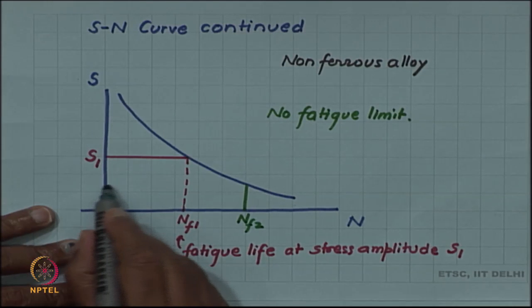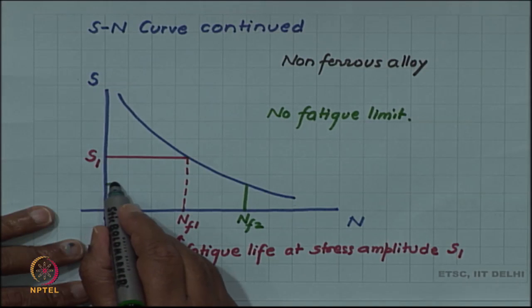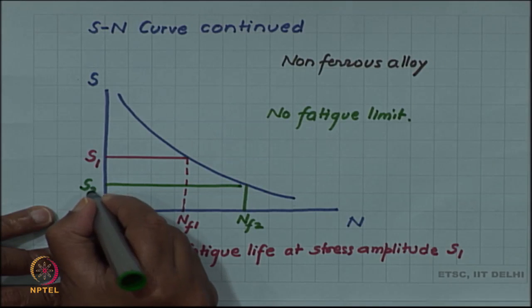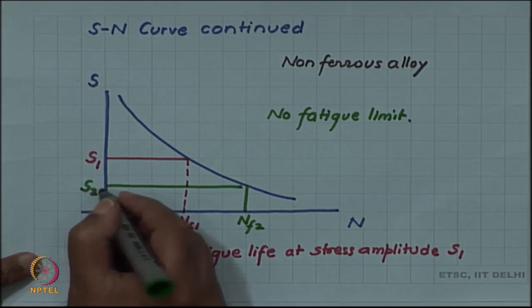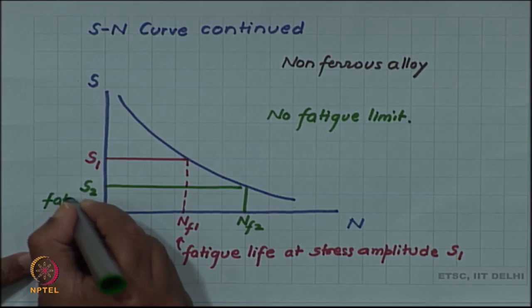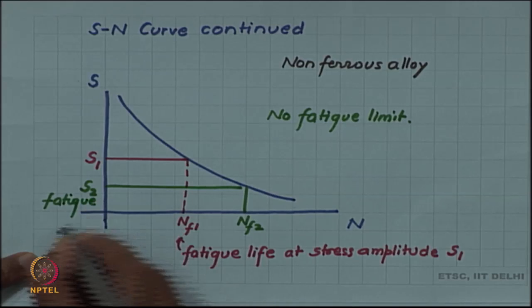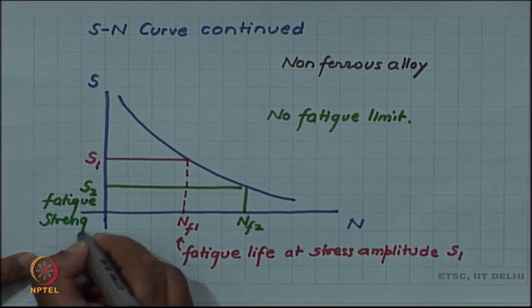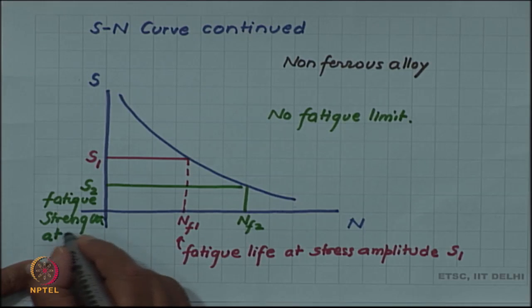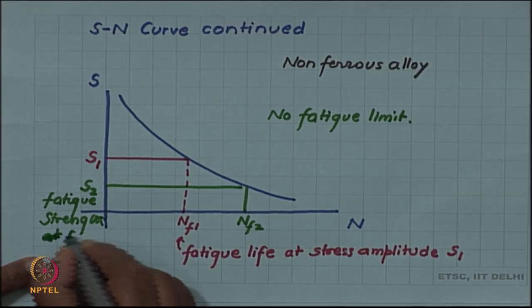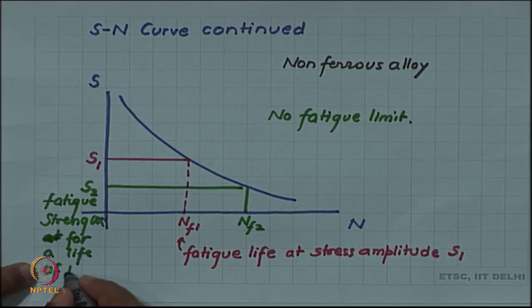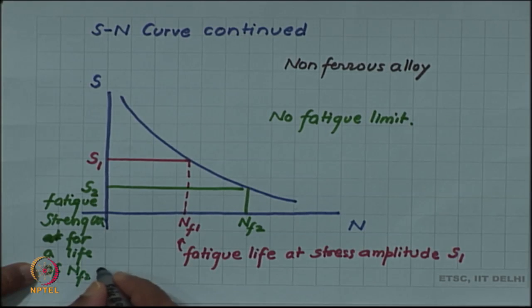Or you can define a life, let us say NF2, and find the stress amplitude corresponding to that. In this case this stress amplitude will be called the fatigue strength for a life of NF2 cycles.